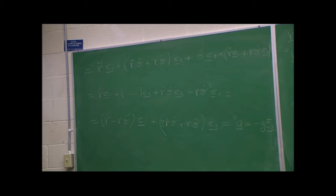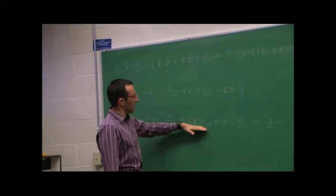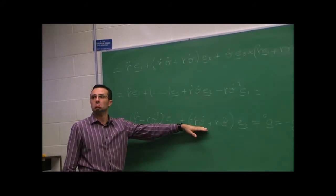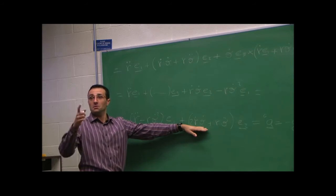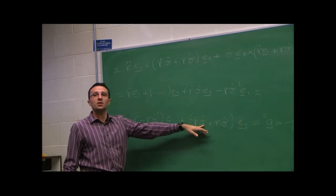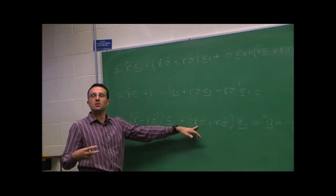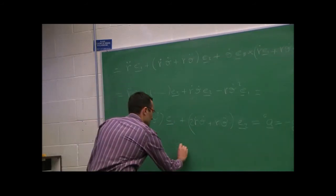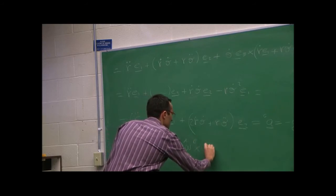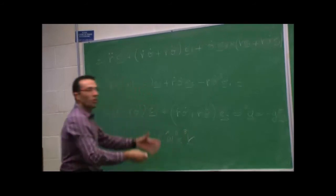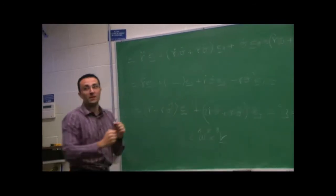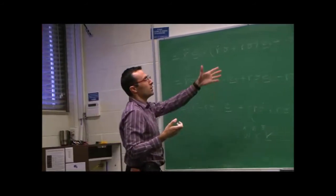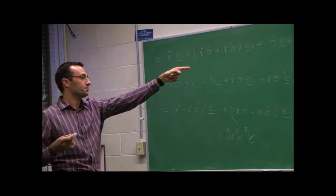One thing to observe: the term 2ṙθ̇ — does this remind you of anything? That's the Coriolis acceleration. You're welcome to name these pieces, but they are nothing else than terms that come out from applying the transport theorem when you use a non-inertial reference frame A. There is no need to memorize the Coriolis formula separately.